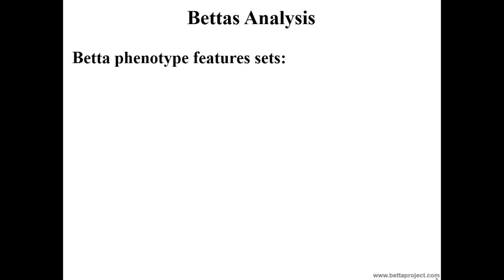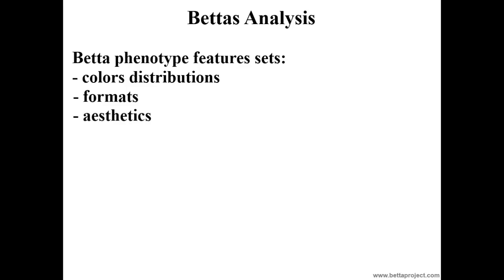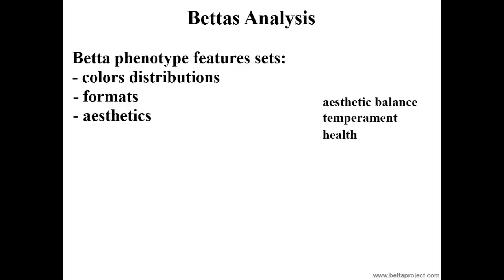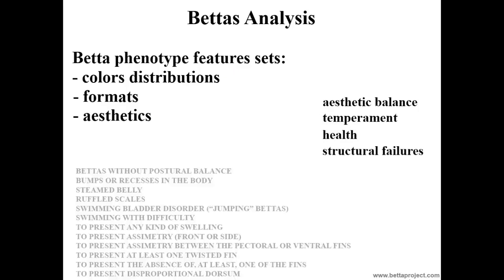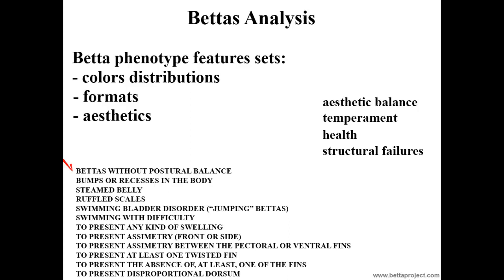We have three big sets of BETA features: one connected with the color distributions of the phenotype, another connected with the phenotype formats, and finally, one connected with the phenotype aesthetics. All BETAs should be evaluated separately regarding color distributions, the format the phenotype is displaying, and the aesthetics of this format — which involves not only aesthetic balance itself, but also temperament, health, and structural failures of the BETA.